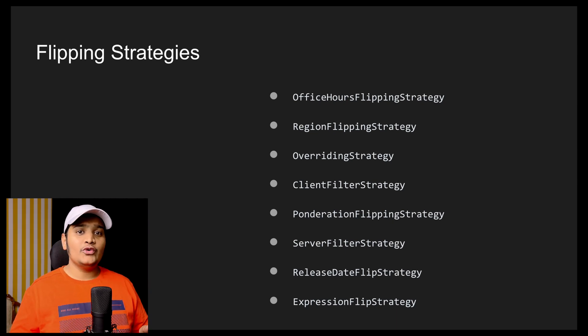The next is the Ponderation flipping strategy. In this strategy you can define a percentage — how much percentage of users you want to enable this feature for. That's a dark launch strategy. Suppose you want a feature enabled for only 10 percent of users; you define the percentage and based on that the flipping strategy will be applied. You can use this for A/B testing, beta testing, or any similar testing scenario.